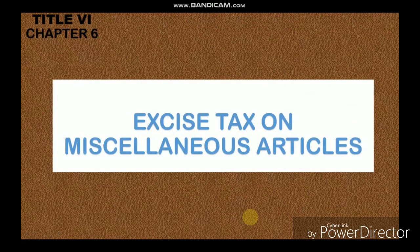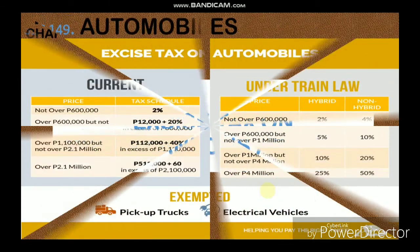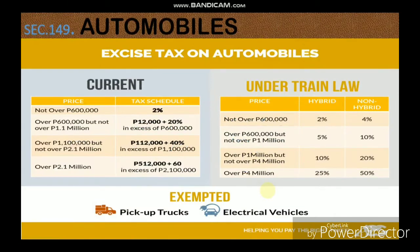Let's go to Chapter 6, which is excise tax on miscellaneous products. Under Section 149, we have automobiles. An automobile is defined as any four or more wheeled motor vehicle regardless of seating capacity, but buses, trucks, cargo vans, ships, jeepneys, substitute single cab chassis, and special purpose vehicles shall not be considered as automobiles.